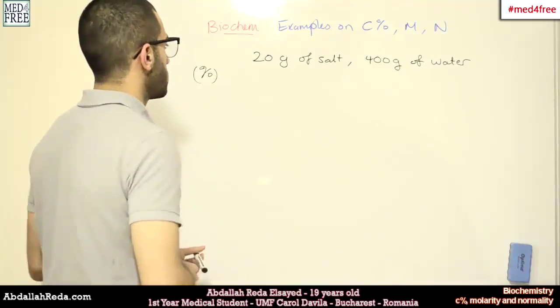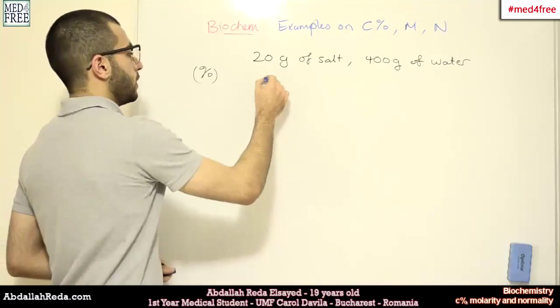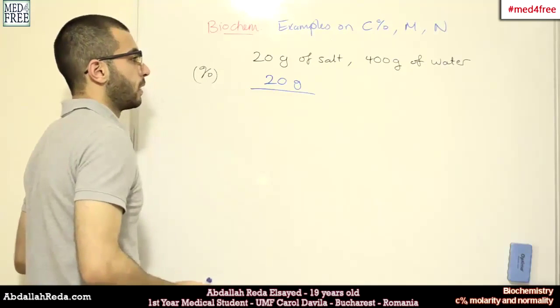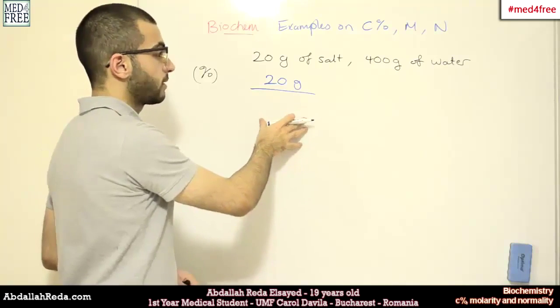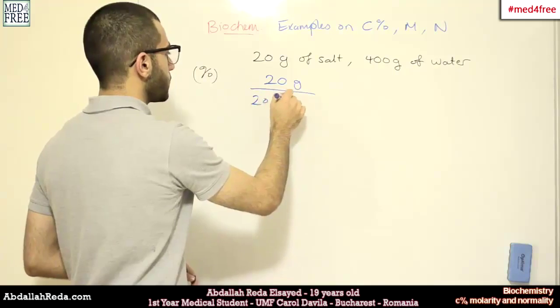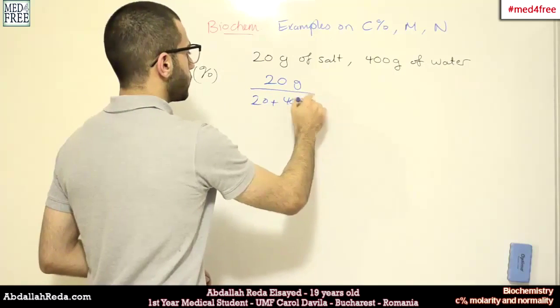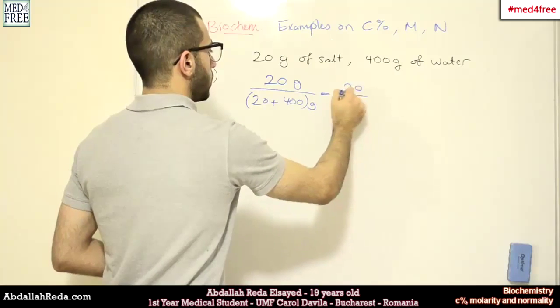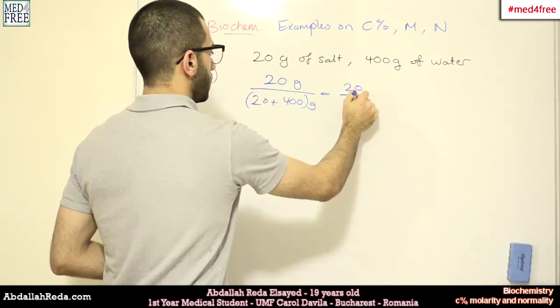What we do is we add the 20 grams of salt and we divide it by the whole weight of the solution. So we have 20 plus 400 grams. We get 20 over 420 grams.